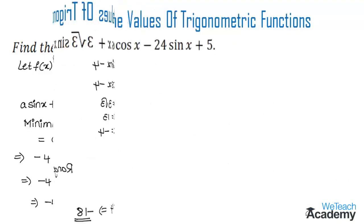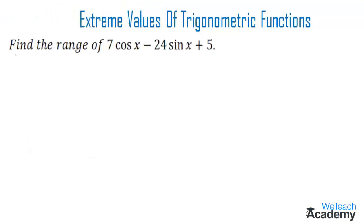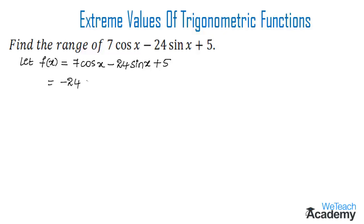Now let us discuss one more example. Find the range of 7cos(x) - 24sin(x) + 5. Let f(x) = 7cos(x) - 24sin(x) + 5. Rearranging, we get -24sin(x) + 7cos(x) + 5. Comparing with a·sin(x) + b·cos(x) + c: